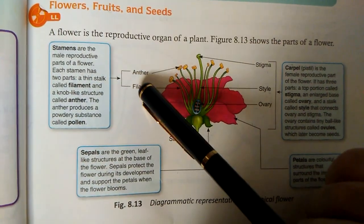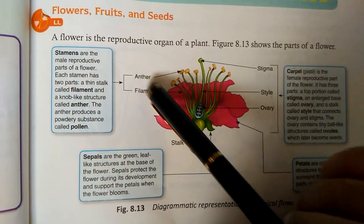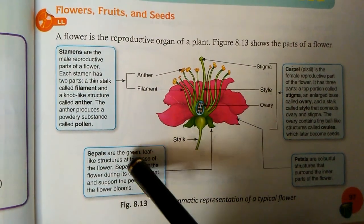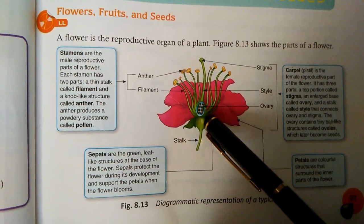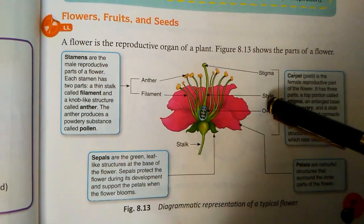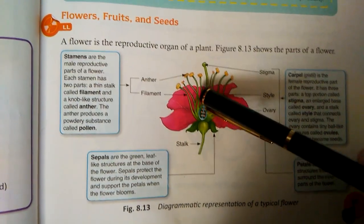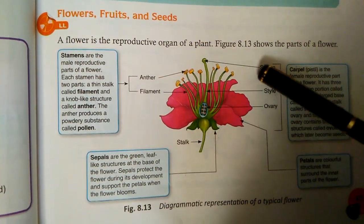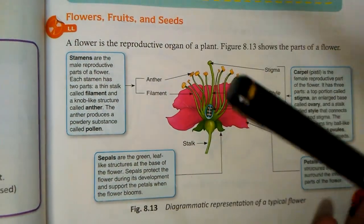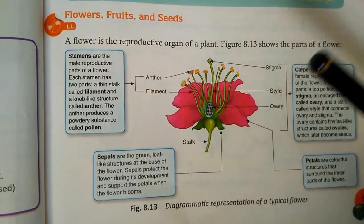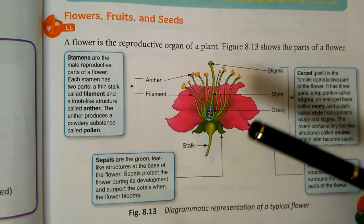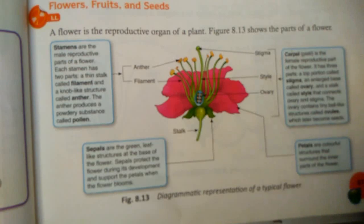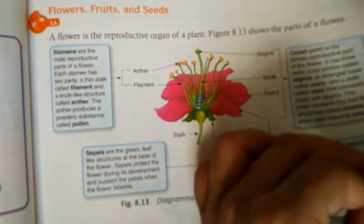This is the anther, this is the filament, this is the style, and these are the sepals. This is the ovary, this is the style, and this is the stigma. I have made a video on parts of flowers — you can see the link in the description given below.